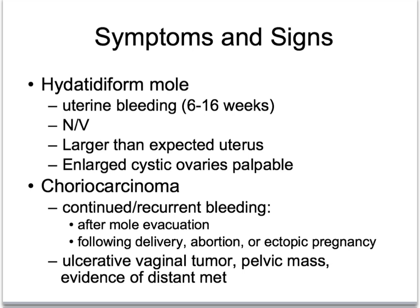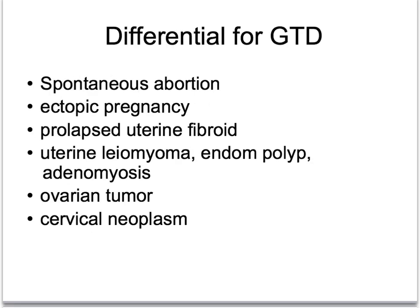Passage of vesicular tissue is most common in a partial mole, but you may see a grape-like mass in a complete mole. The differential for gestational trophoblastic disease and hydatidiform mole includes other causes of bleeding early in pregnancy, which would include spontaneous abortion, ectopic pregnancies, prolapsed fibroids, or other uterine processes.